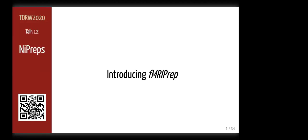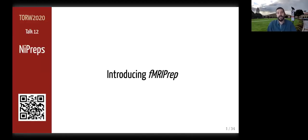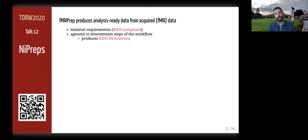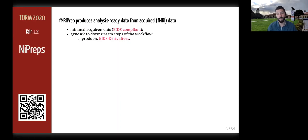fMRIPREP takes in a task-based or resting state functional MRI dataset in BIDS format and returns pre-processed data ready for analysis. Pre-processed data can be used for a broad range of analyses and are formatted following the BIDS derivatives specifications to maximize compatibility with major software packages, for example AFNI, FSL, SPM, further temporal filtering and denoising, or the fMRIPrep noise tool or any other BIDS derivatives workflow compliant with the specifications.